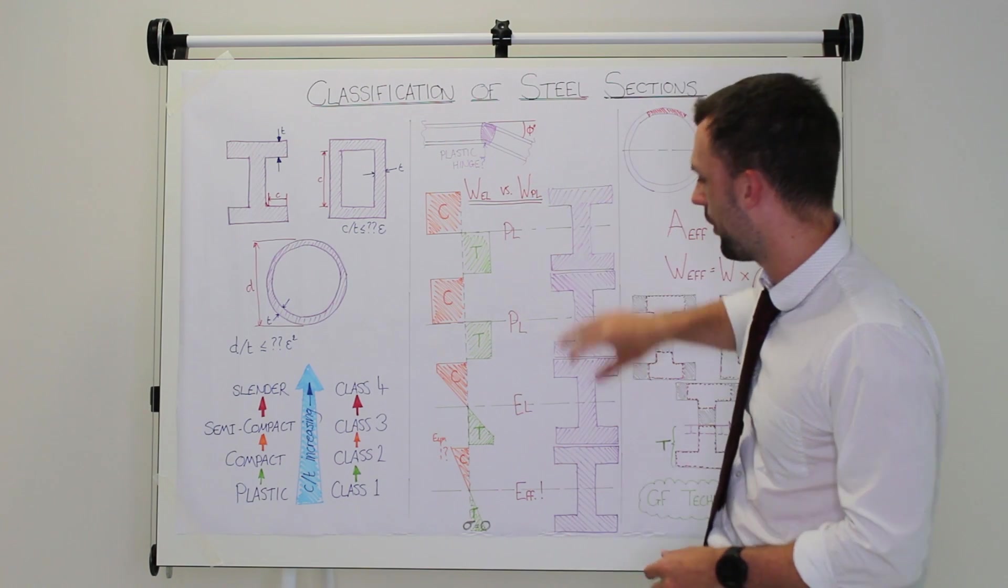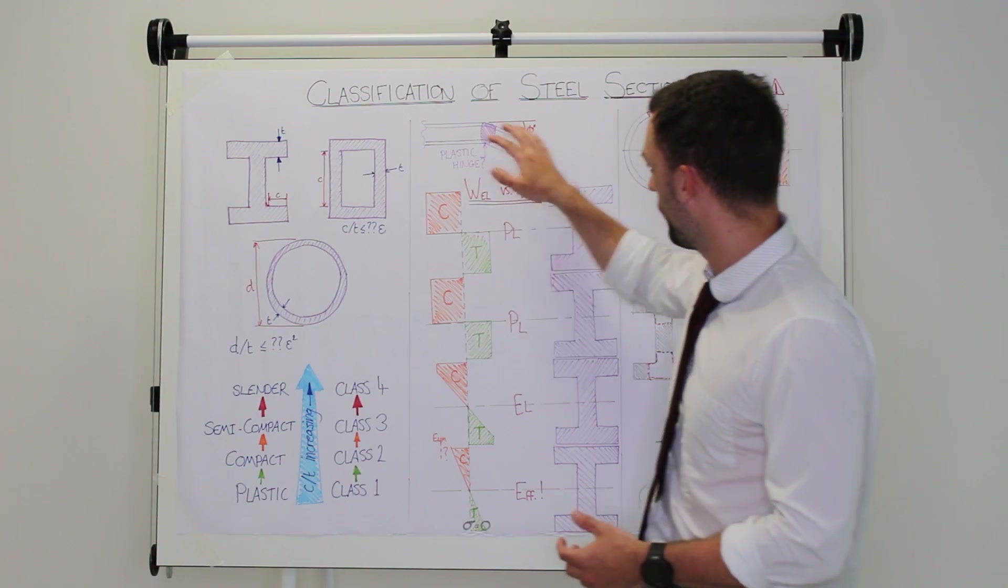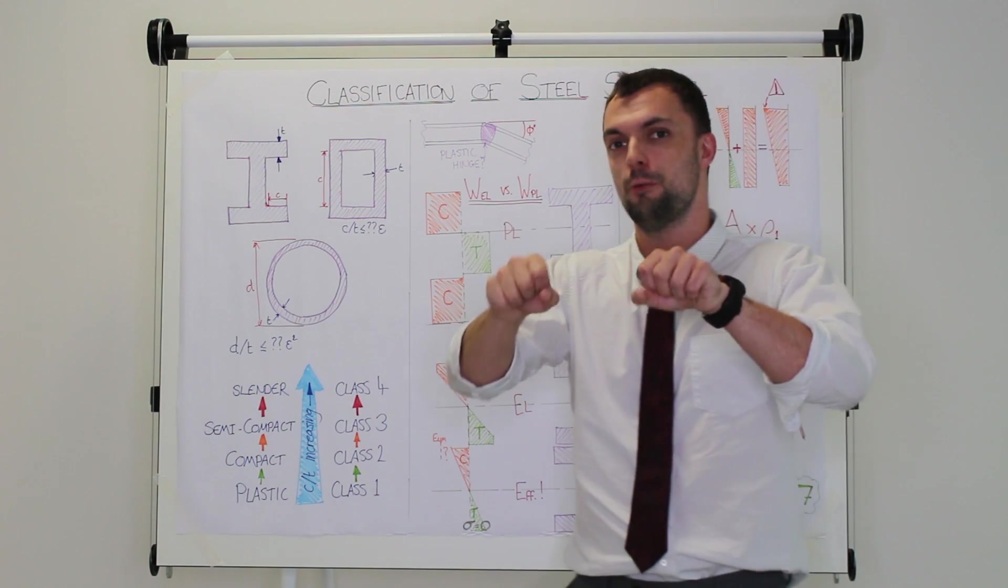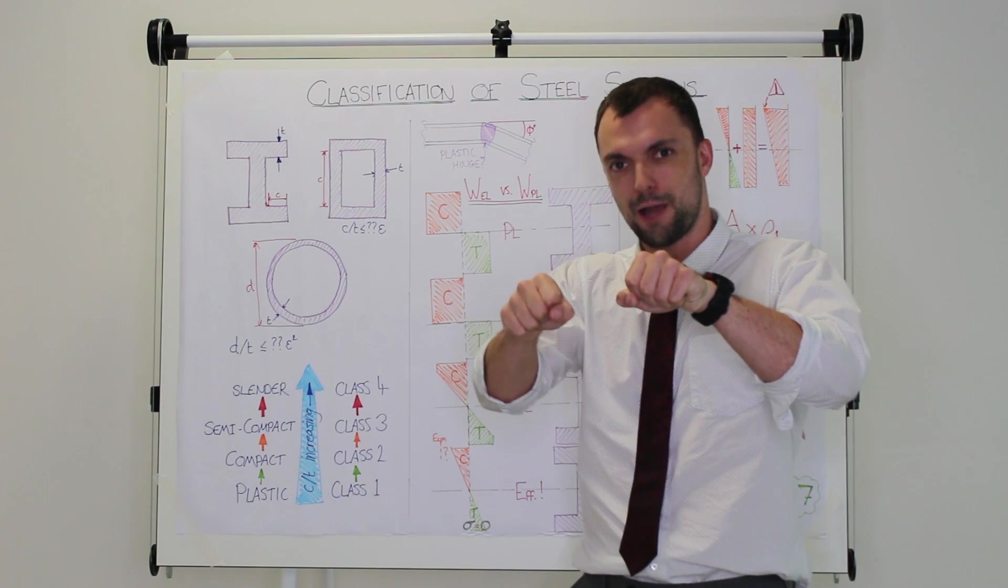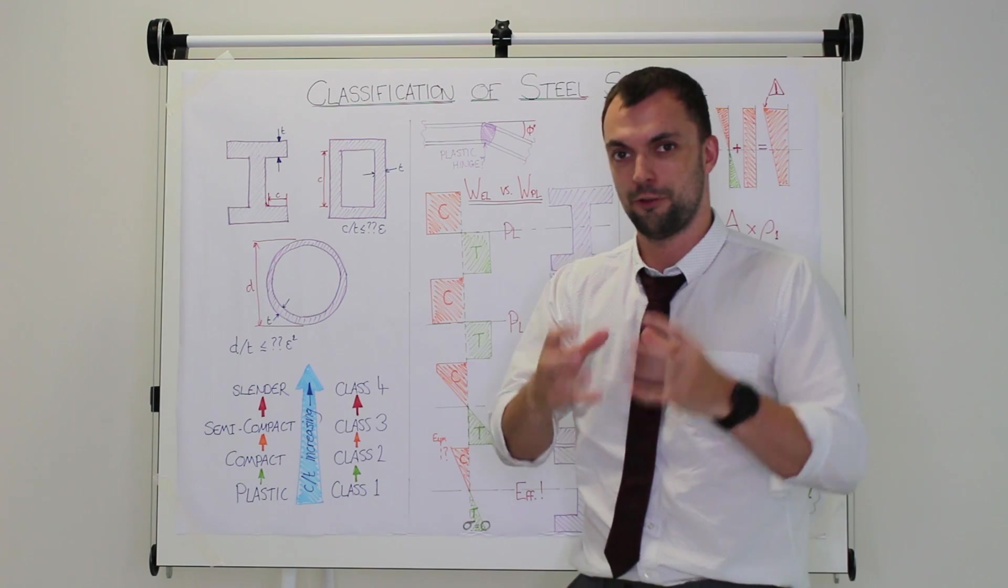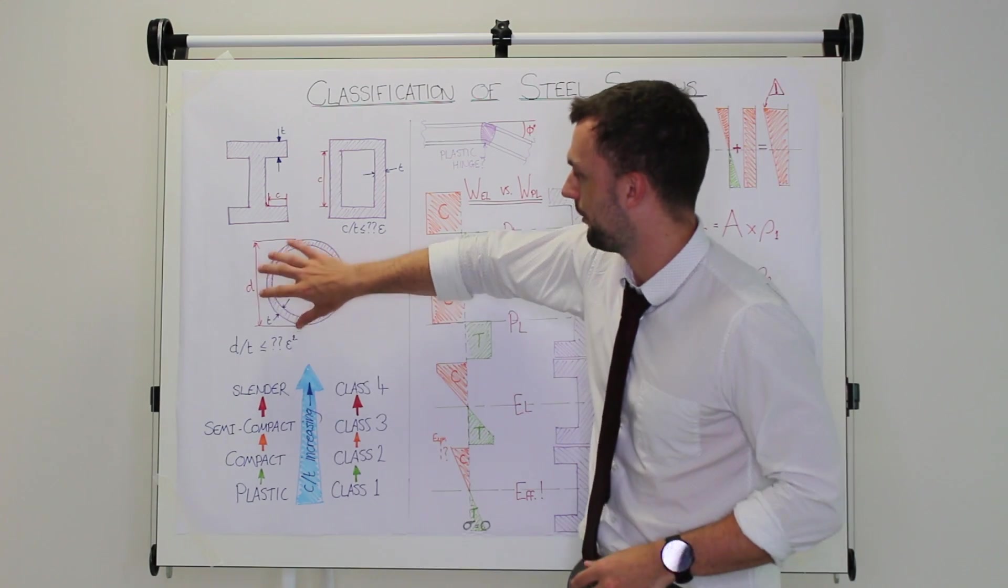Just short of that, you've got a class 2. You'd also use plastic properties with this. Now once you get to that point of yield and your stress distribution looks like that, it will form a plastic hinge and it will allow itself to rotate, but you've got a limited amount of rotation before that area buckles, and this is why we're comparing thicknesses to lengths. It's all about local buckling.